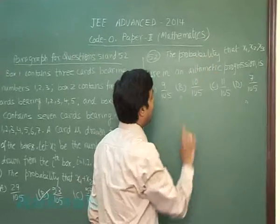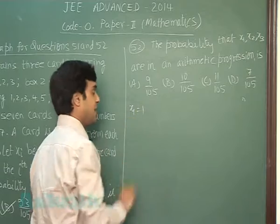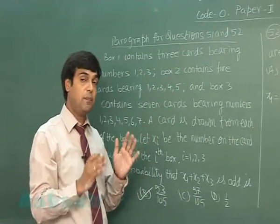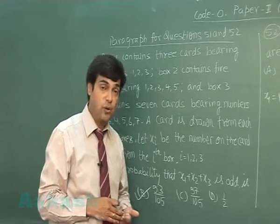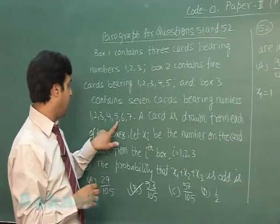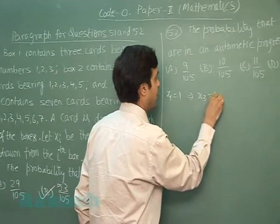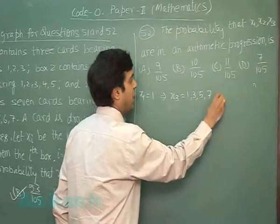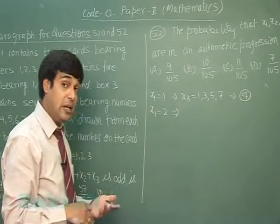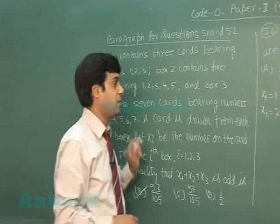Question 52: the probability that x1, x2, x3 are in AP. When x1 is 1, x3 must be odd, because even plus odd divided by 2 gives a fractional value not present in box 2. So when x1 is 1, x3 can be 1, 3, 5, or 7 — that is 4 cases. When x1 is 2, x3 must be even — 2, 4, or 6 — giving 3 possible cases. Note that when x1 and x3 are fixed, x2 is automatically determined.